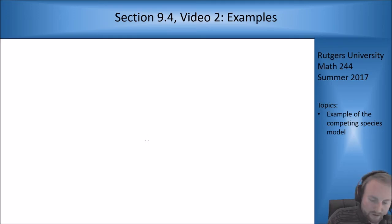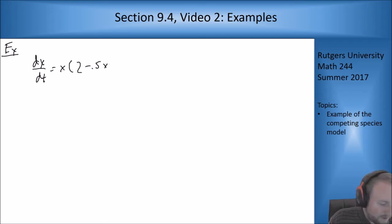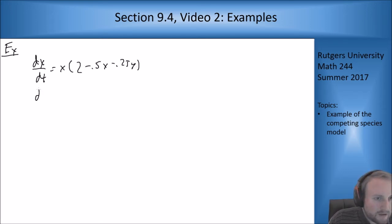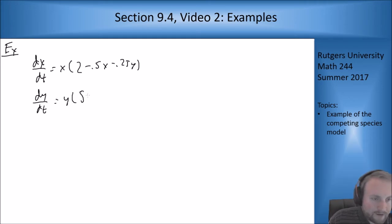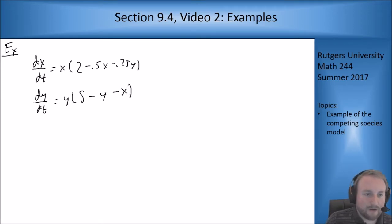The example we want to do is this one: dx/dt equals x times (2 minus 0.5x minus 0.25y), and dy/dt equals y times (5 minus y minus x). Let's start with a nullcline analysis and do that part first, then we'll go on to the Jacobian analysis afterwards.